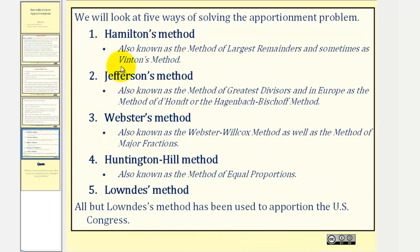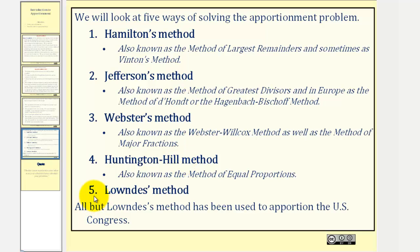So over this next set of lessons, we'll be looking at five ways of solving the apportionment problem. Number one, we'll look at Hamilton's method. Two, Jefferson's method. Three, Webster's method. Four, the Huntington-Hill method. And finally, five, the Lowndes method. All but the Lowndes method has been used to apportion US Congress. I hope you find these upcoming lessons helpful. Thank you for watching.